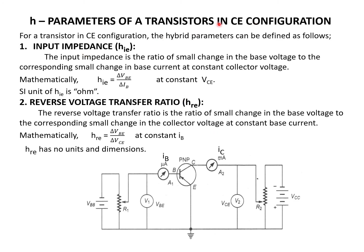For CE configuration, the hybrid parameters are defined as follows. The input impedance HIE is the ratio of small change in base voltage to small change in base current — that is, HIE = ΔV_BE / ΔI_B. This directly represents resistance, hence the unit is ohm.